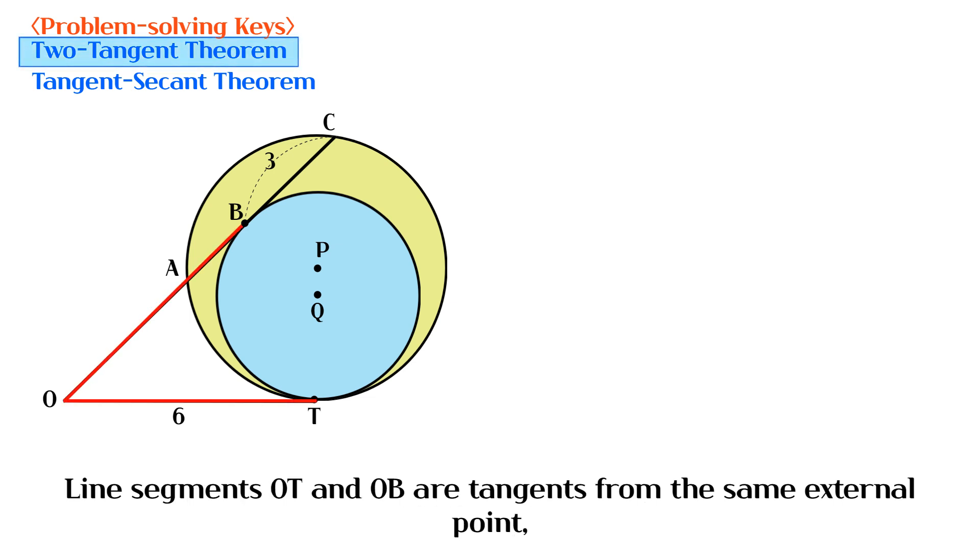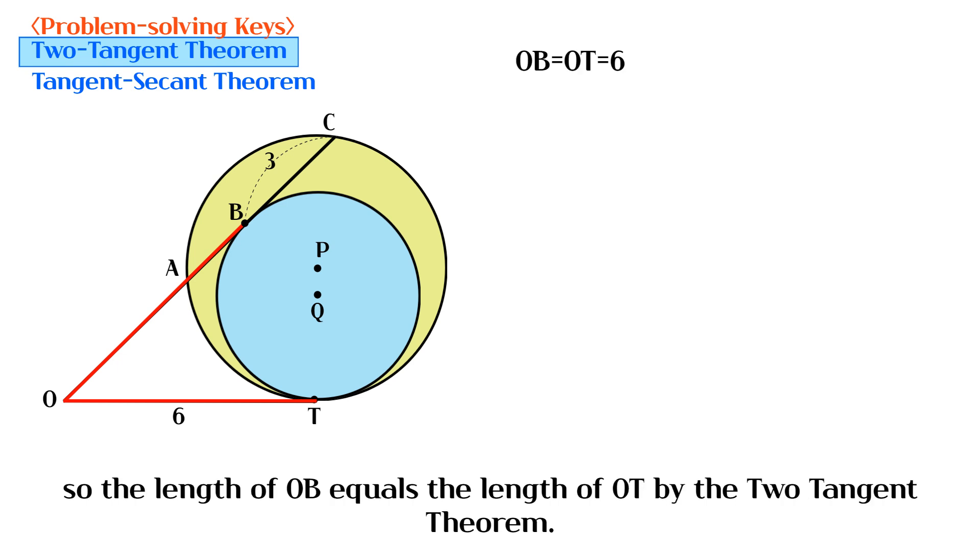Line segments OT and OB are tangents from the same external point. So the length of OB equals the length of OT by the two tangent theorem.